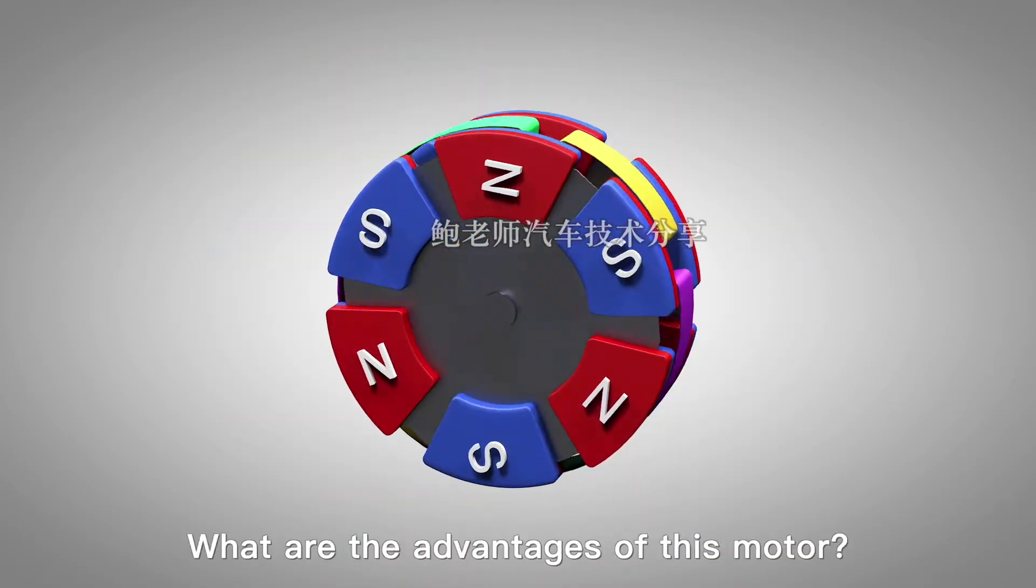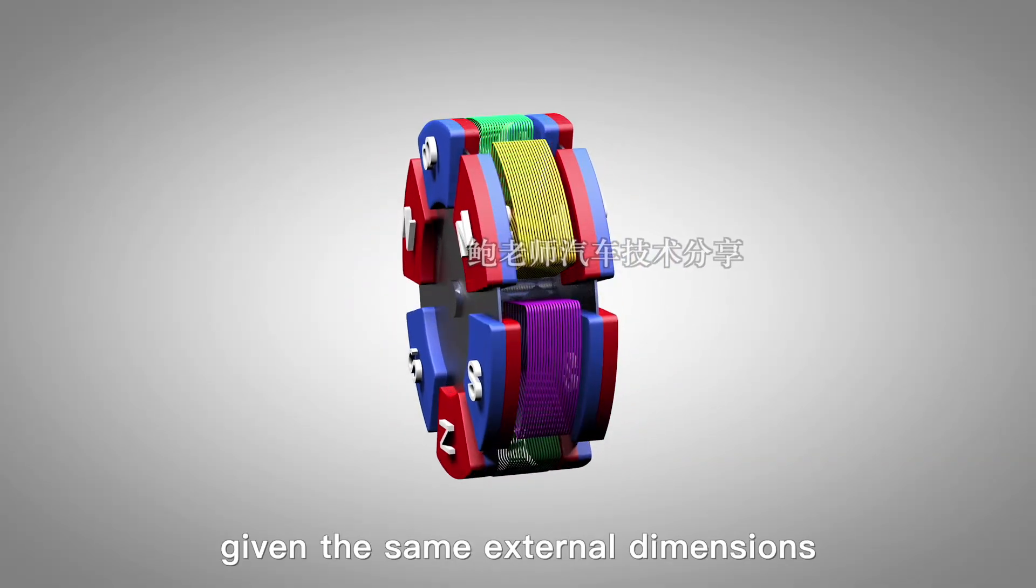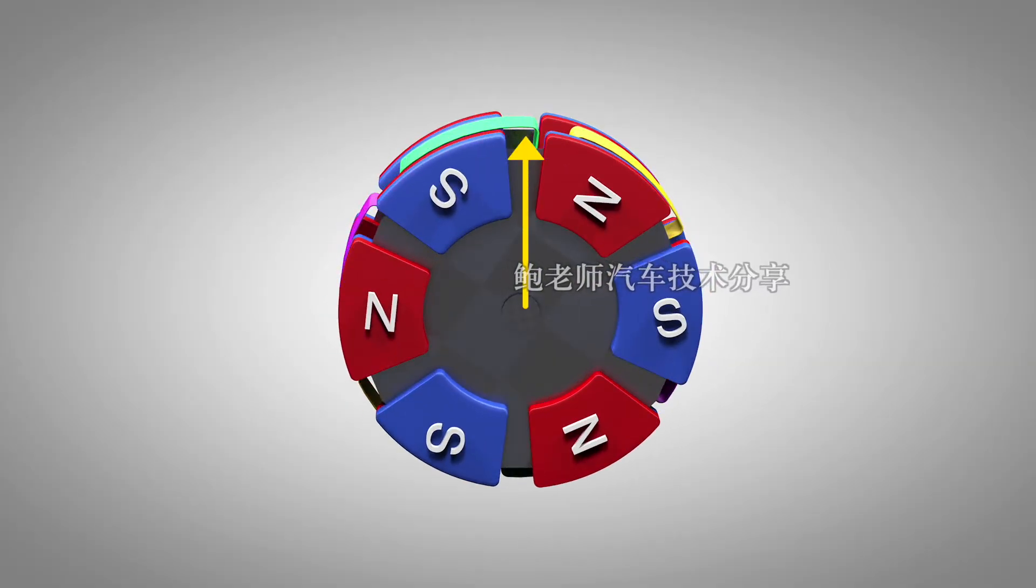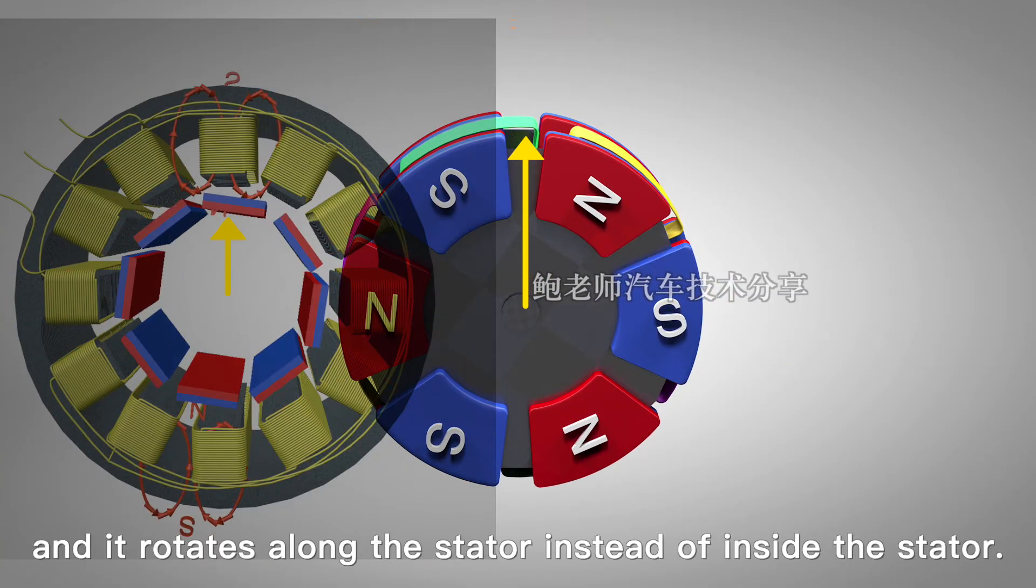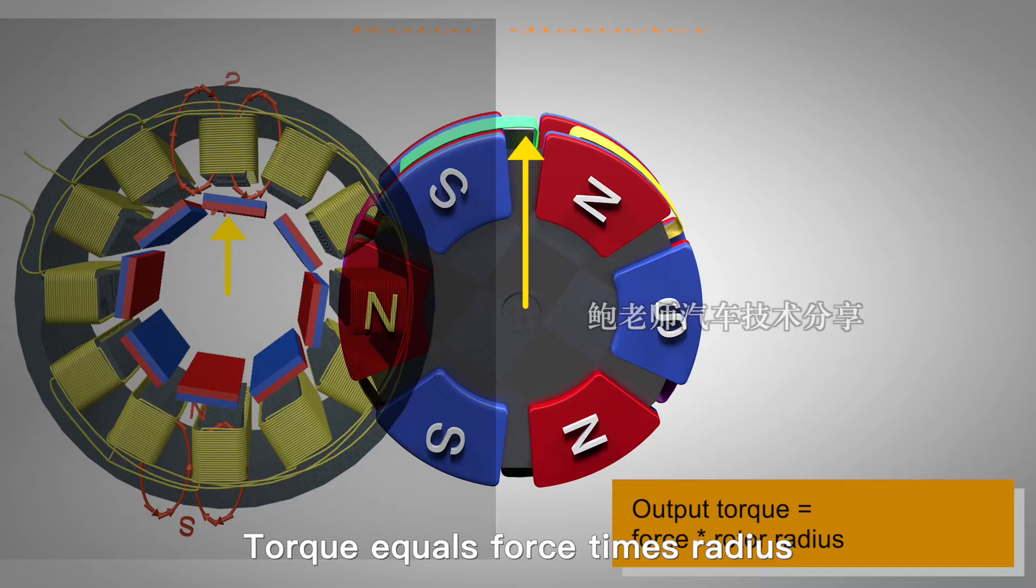What are the advantages of this motor? Obviously, given the same external dimensions, the core advantage of an axial flux motor is that the diameter of the rotor is larger, and it rotates along the stator instead of inside the stator. Torque equals force times radius.